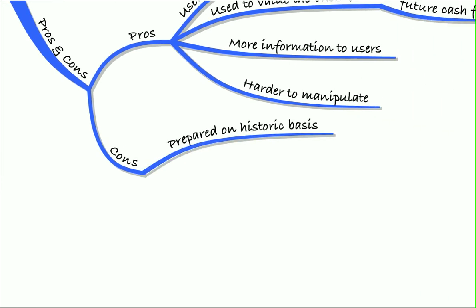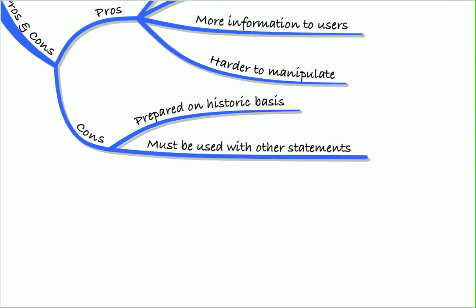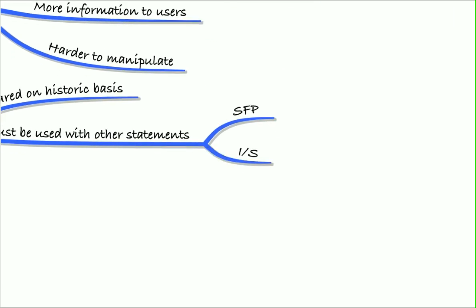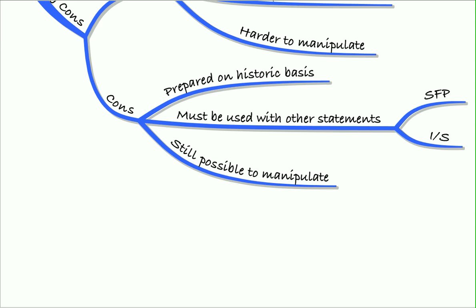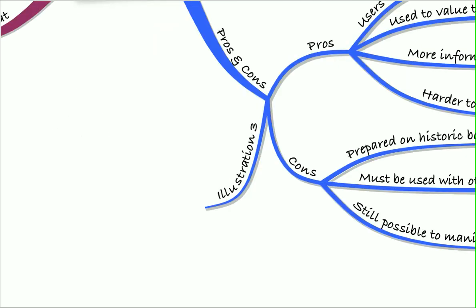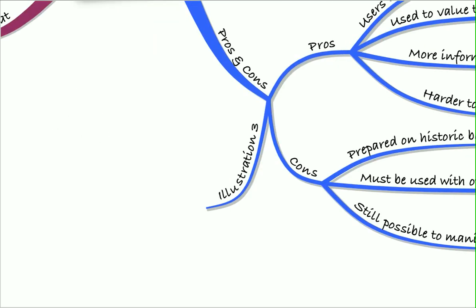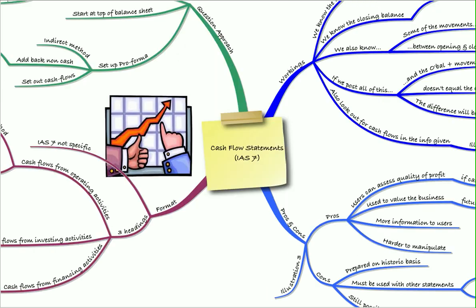However, on the downside, it is prepared using historic information, so it's prepared on a historic basis. It must also be used with other statements—you must use your income statement and statement of financial position in conjunction with your cash flow statement to get an idea of how the business has done. And it is still possible to manipulate it, so be aware of that. You could classify items that should be financing cash flows as operating cash flows or something like that to manipulate those cash flows. We went through a full past paper question in illustration three to see exactly how to approach these cash flow statements. So that was a recap of our lecture on cash flow statements.